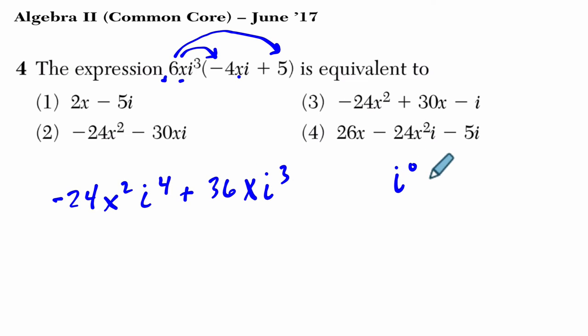Now, powers of i, you might recall, i⁰ is 1, i¹ is itself, which is the square root of -1. i² if you square the square root of -1, you just get -1. i³ is -1 times i, so -i.